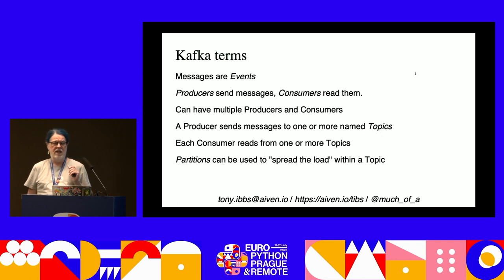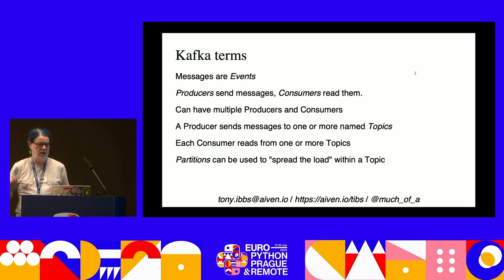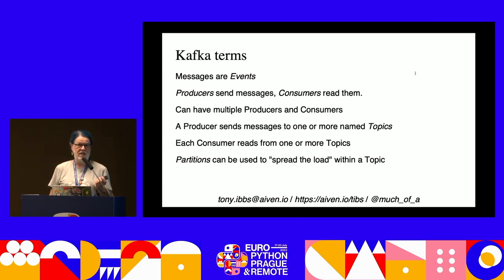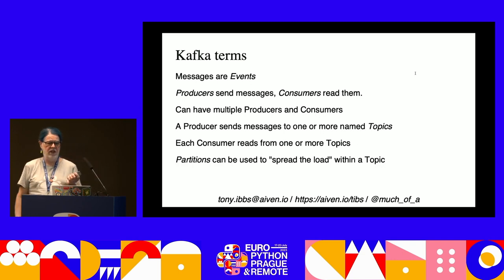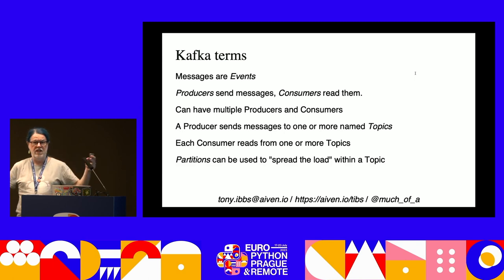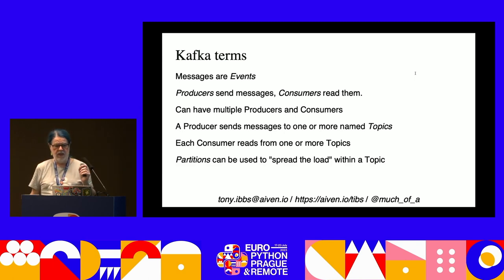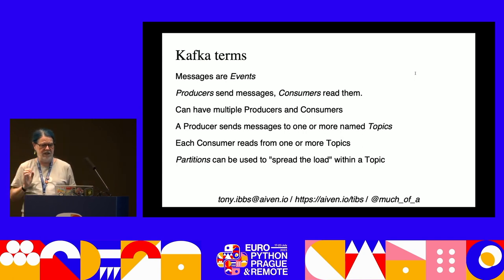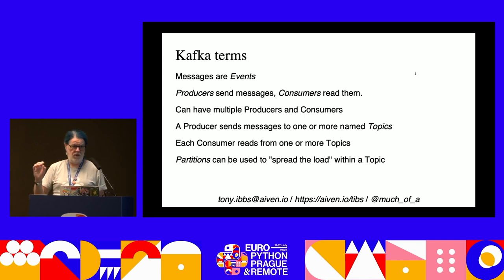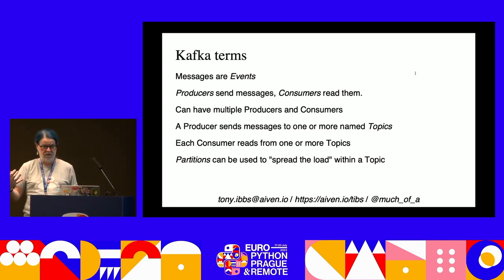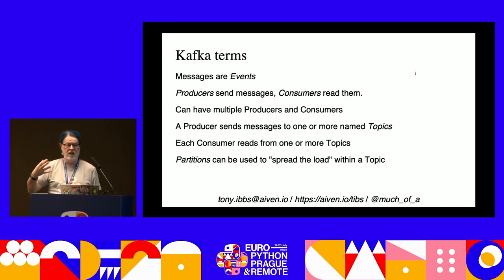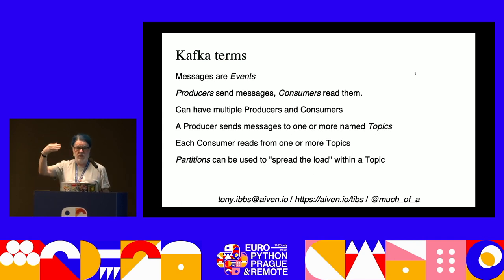Some terminology: Kafka has messages - they're events, reporting that something has happened. Producers send messages and consumers read them. You can have multiple producers and multiple consumers; they are independent and not tied together in any way. A producer sends messages to one or more named topics, and a consumer reads from one or more topics, specifying which topics it wants. Internally, Kafka has partitions which are used to spread the load within a topic.